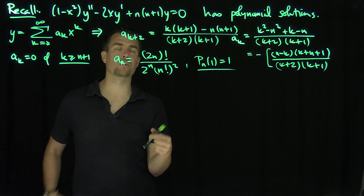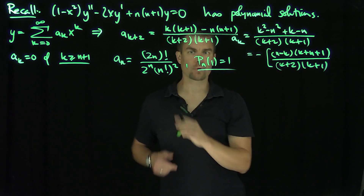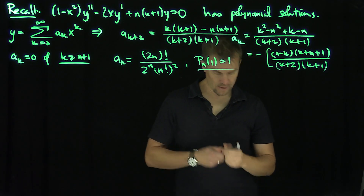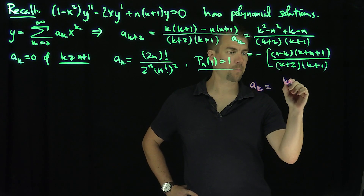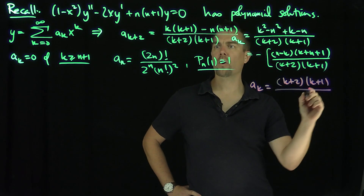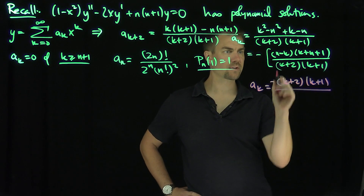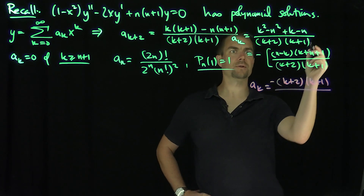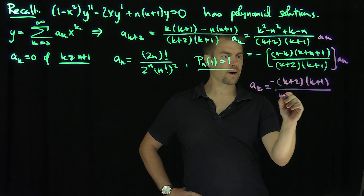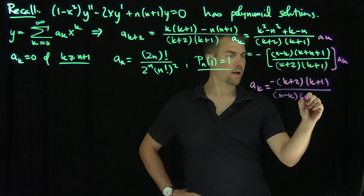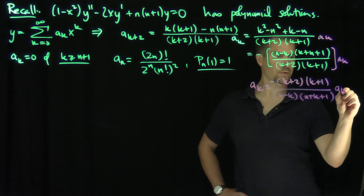Now I'm going to write down the series going backwards and stepping — mapping a_k in terms of a_{k+2}. Taking this recursion and inverting it: a_k equals (k+2)(k+1) over negative (n minus k)(n + k + 1), times a_{k+2}.